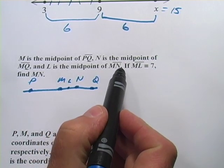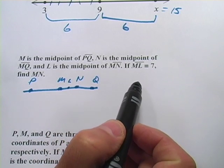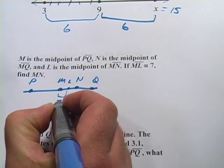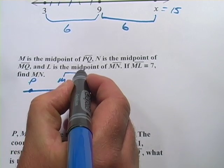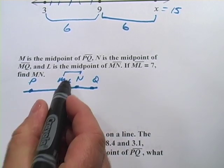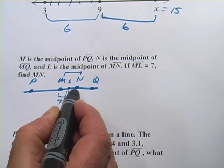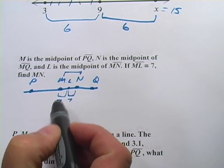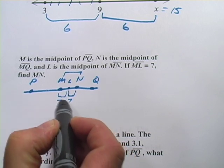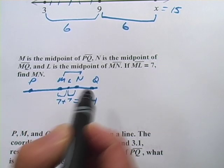And then it says if ML equals 7, find MN. So this distance right there is 7. What's this distance? Since L is the midpoint here, if this side is 7, then this side is going to be 7 as well. And that covers from M to N, so it would be 7 plus 7, or 14.